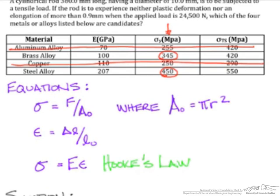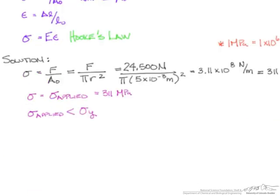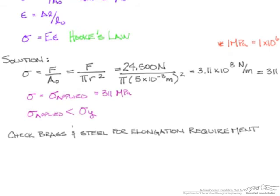So, the next step we need to go ahead and do is check brass and steel for the elongation requirement. Using Hooke's Law and Engineering Strain, we can go ahead and find the maximum elongation for both brass and steel. So, using Hooke's Law, where sigma is equal to E times epsilon,